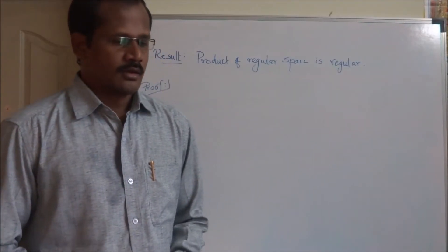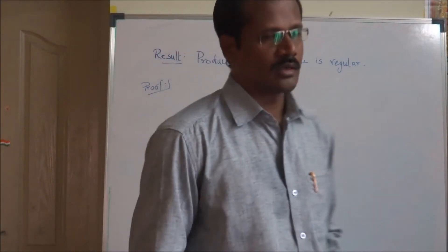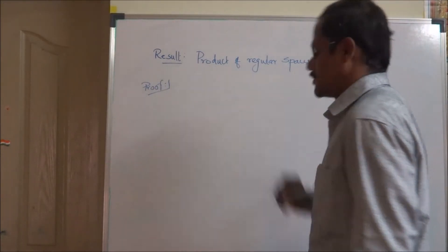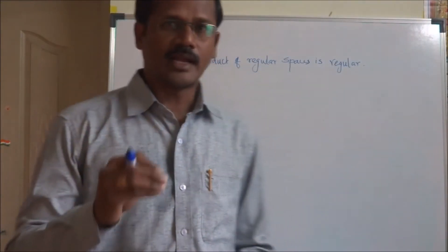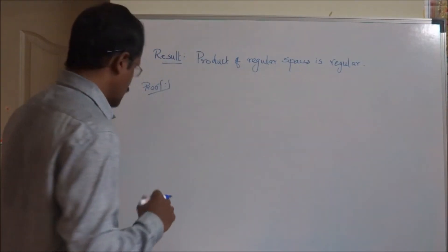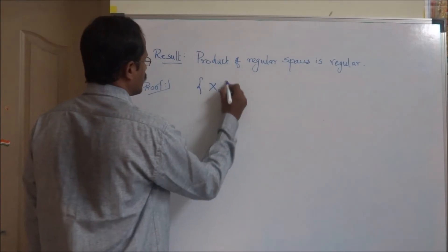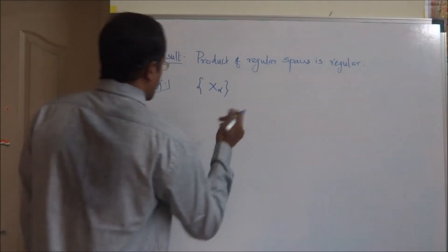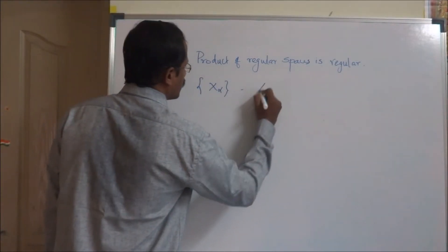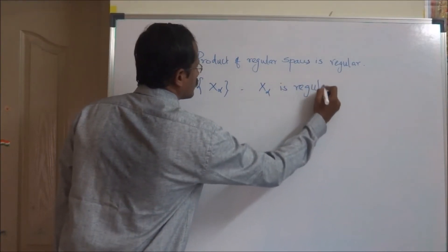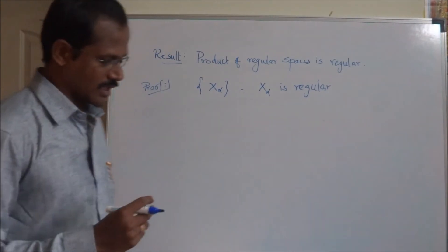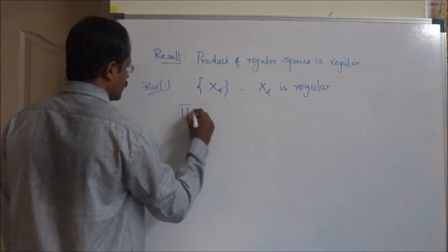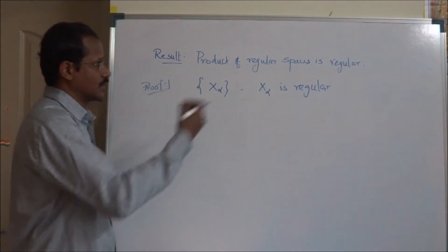Good morning students. In this video we are going to prove that the product of regular spaces is regular. That is, given a collection of regular spaces — say X_α where α varies over an index set J — if each X_α is a regular space, then the product space ∏X_α equipped with the product topology is also a regular space.